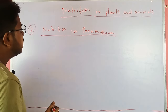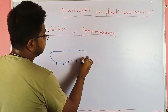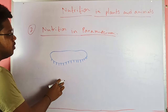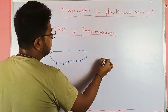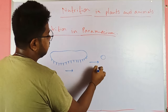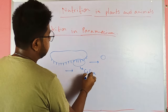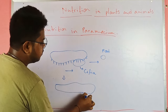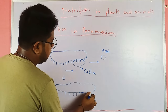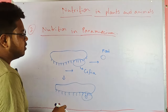In paramecium, we see a ciliated body — cilia are small leg-like or finger-like structures that help paramecium move forward and backward. When food is present in front of paramecium, it moves toward the food. With the help of these ciliated structures, it engulfs the food within its cell and breaks it down to get energy.